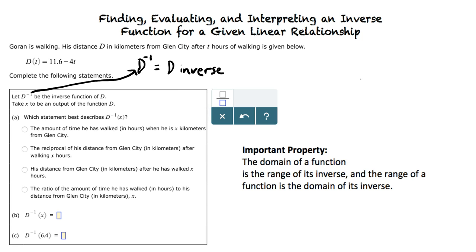This means that the inverse will be solving for time based on Goran's distance from Glen City, since time is the domain of d of t, and the distance is the range. So the answer to part a is the first choice. The other choices do not make sense in this context according to the definition of an inverse function.